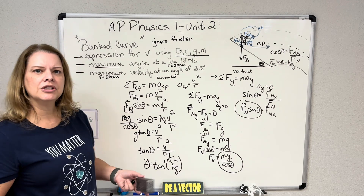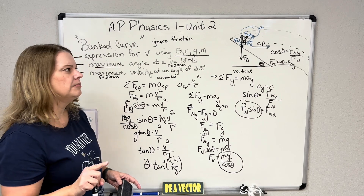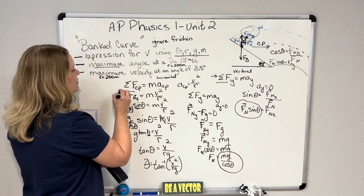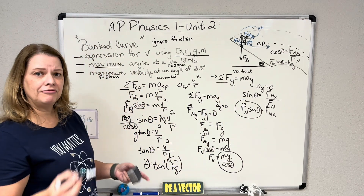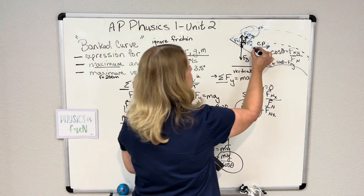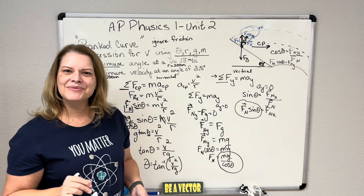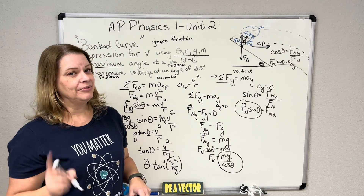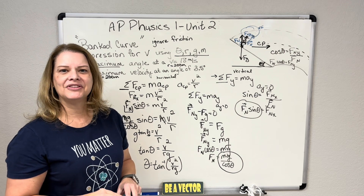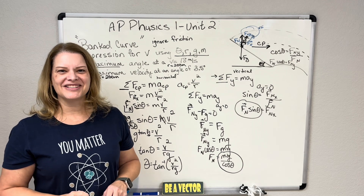Those are really the three ways they ask this question. Main thing: this is not a ramp. You're still going to be summing forces in the Y direction, and the centripetal forces are in the horizontal X direction, because centripetal force is center-seeking straight towards the middle of that curve. I hope that helps. If you like this video, please like it, subscribe, and share with your friends. Thank you for watching and happy physicsing!